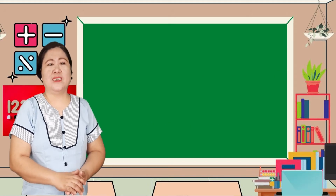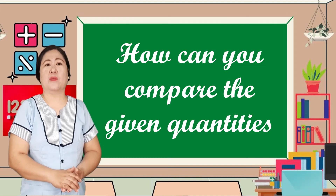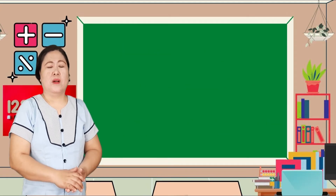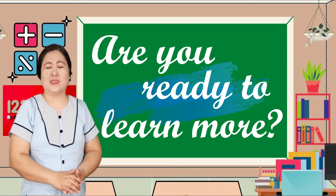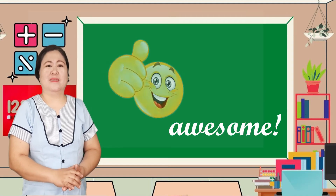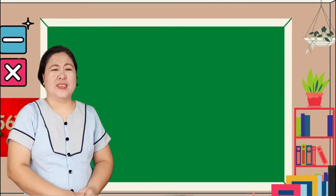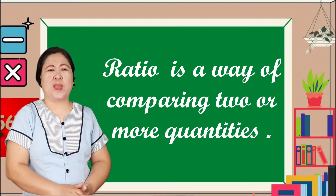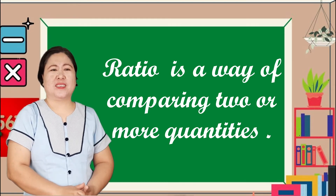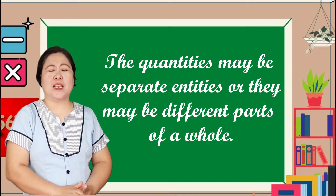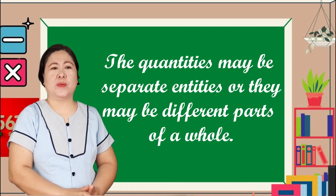For today's lesson, we will study how you can compare given quantities. Alright class, are you ready to learn more about all this? Awesome! Now let's begin. Ratio is a way of comparing two or more quantities having the same units. The quantities may be separate entities or they may be different parts of a whole.